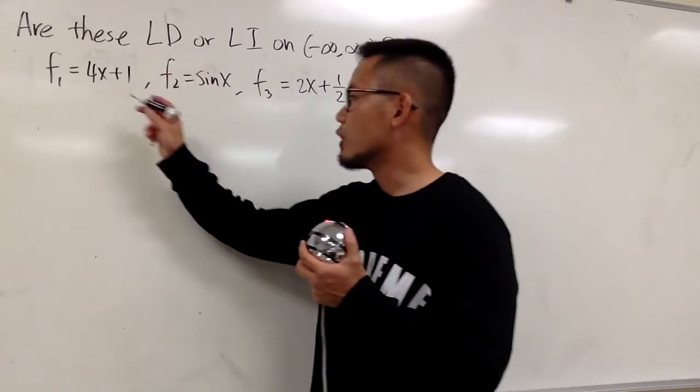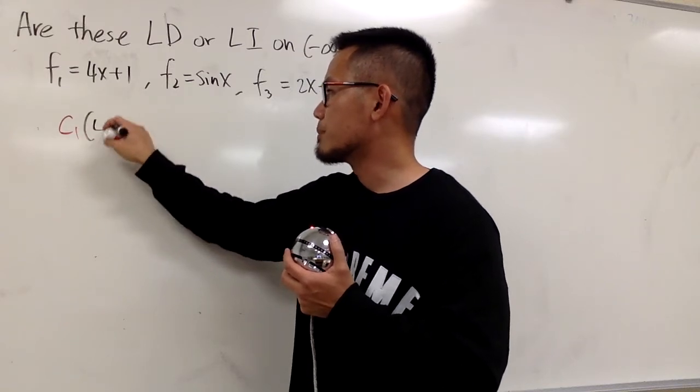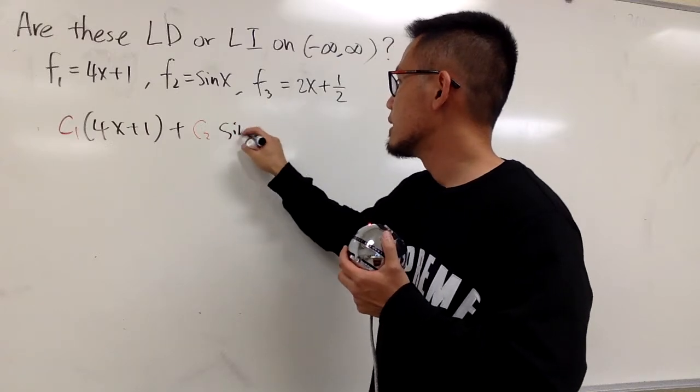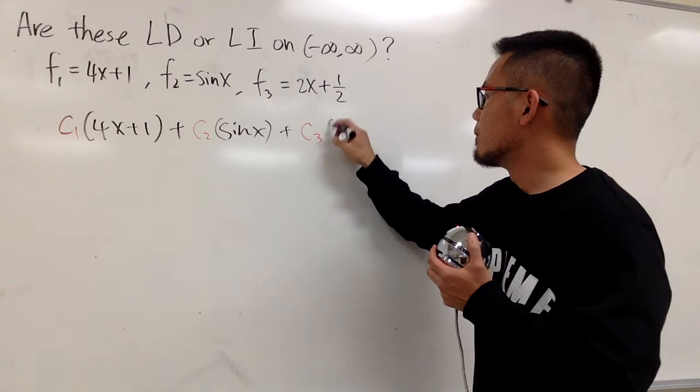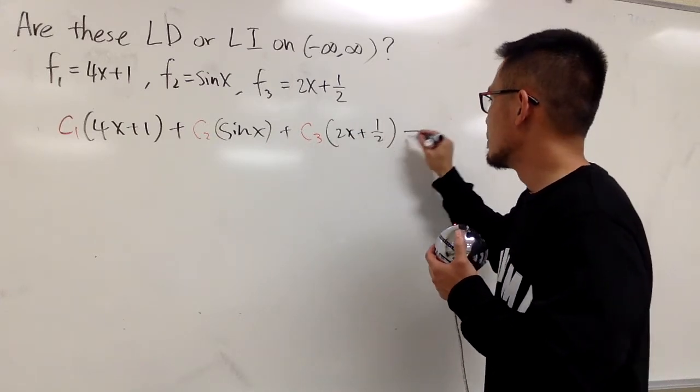So anyways, to show LD, I'm just going to put down c1 to be multiplied with 4x plus 1, plus c2 times sinx, and then plus c3, multiplying with 2x plus 1 half. And we'll make this equal to 0.